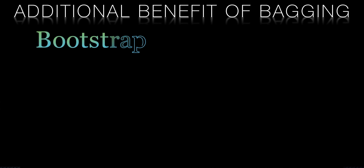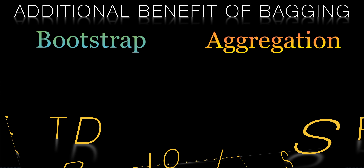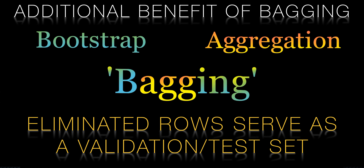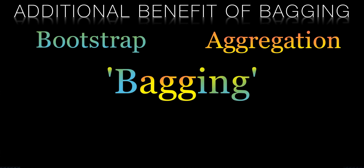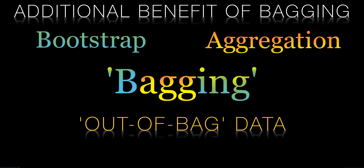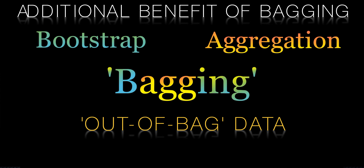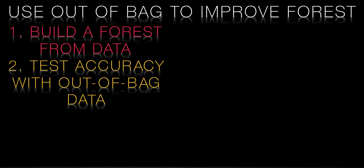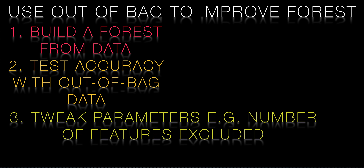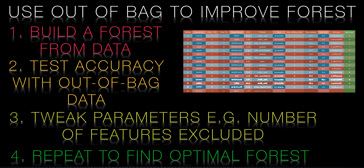One very useful side effect of bagging is that you automatically create a unique test set per tree. Bagging introduces duplicates but it also eliminates several records, typically around a third. These out-of-bag samples can be used to test how good the predictions of each tree are. We can take each out-of-bag sample and run it through all of the trees from which it was excluded. Repeating this for all of the out-of-bag samples allows us to get a measure for how good our forest is at classifying.